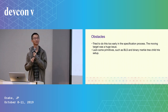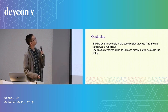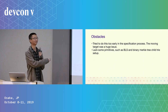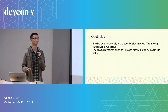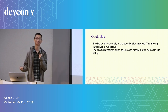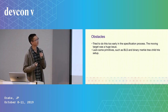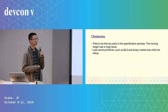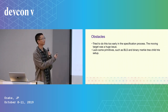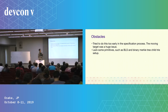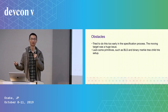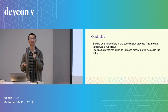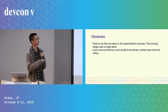We did encounter some obstacles. The issue is we tried to do this too early in the specification process — at that time the specification was still changing a lot, which created a lot of problems because for each new release we were basically rewriting everything. We're also still missing some primitives: we have the child merkle tree structure, but we don't yet have a binary merkle tree child tree setup. BLS signatures work on the runtime by itself, but without new native primitives, BLS will be too slow for production use — so those primitives are also something we need to add.